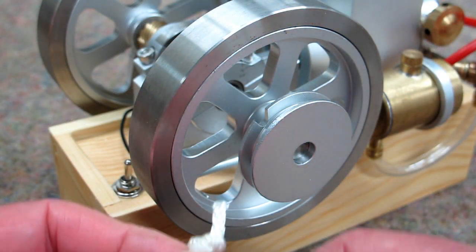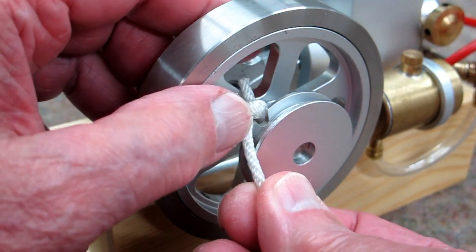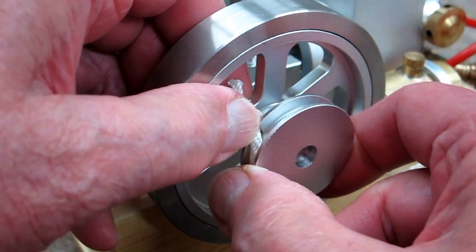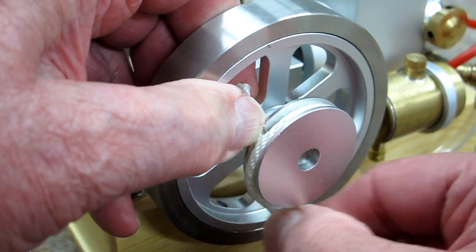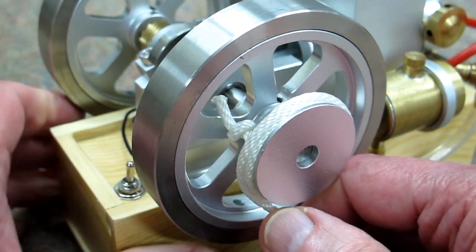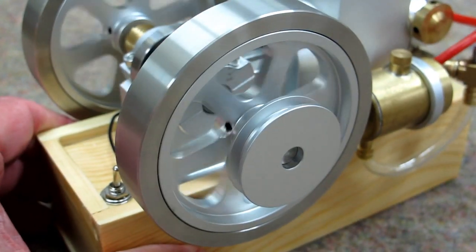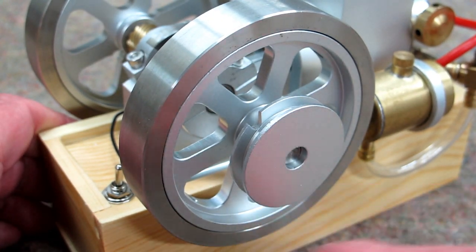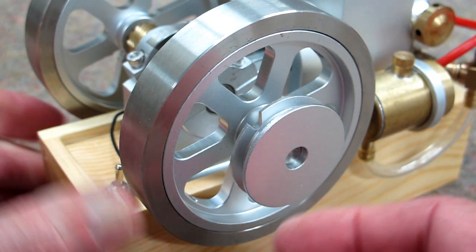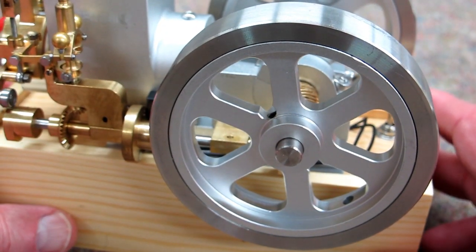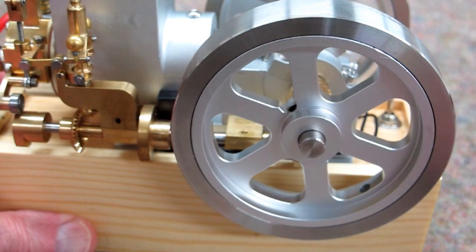This is the rope starter pulley on this side of the engine. Put the knot in there. And wrap the rope around there. Make sure the ignition is turned on. Give it a pull. It spins this in a counter clockwise direction which is clockwise on this side. All of these engines have turned clockwise when viewed from this side.